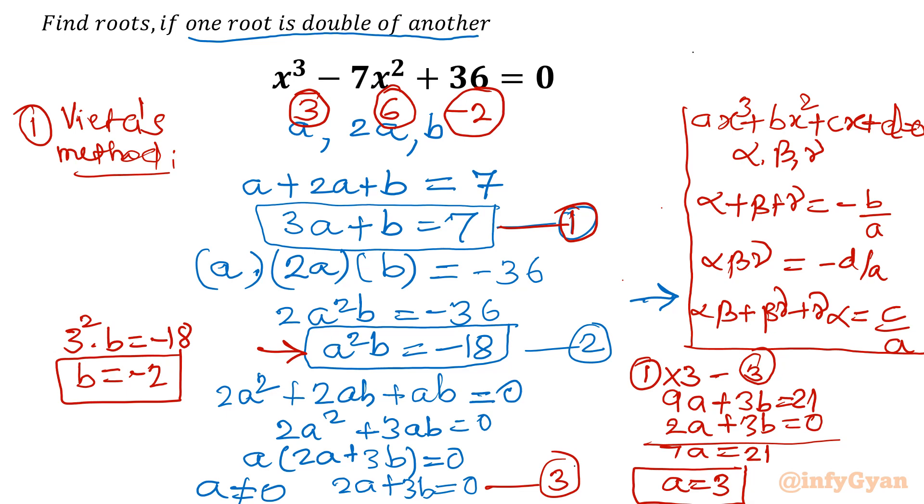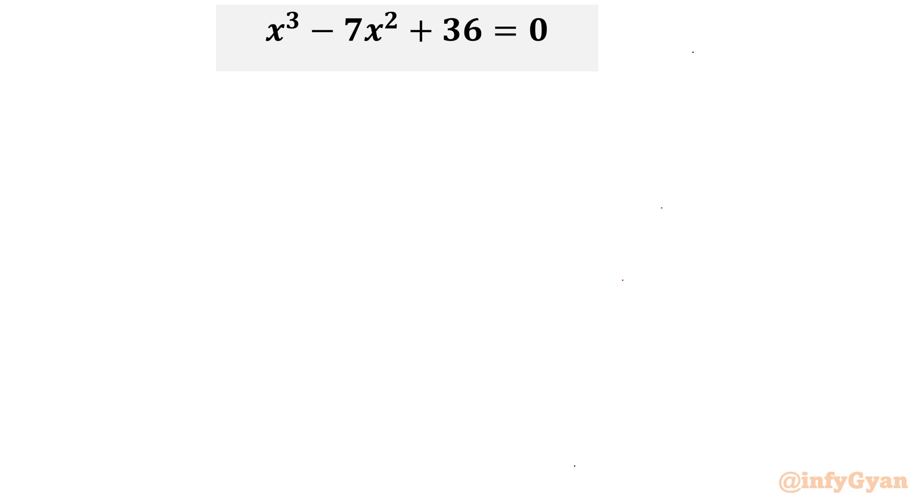Now let's take the second method. I will consider substitution: x = 1/y. Let's put it here: 1/y³ - 7/y² + 36 = 0. As you can see, x cannot equal 0, so y cannot also equal 0.